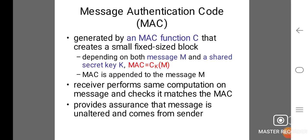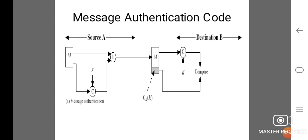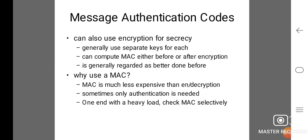A Message Authentication Code (MAC) is generated by a MAC function C that creates a small, fixed-sized block depending on both the message M and a shared secret key K: MAC = C_K(M). The MAC is appended to the message M. The receiver performs the same computation on the message and checks it matches the MAC, providing assurance that the message is unaltered and comes from the sender.